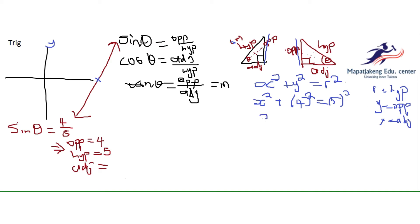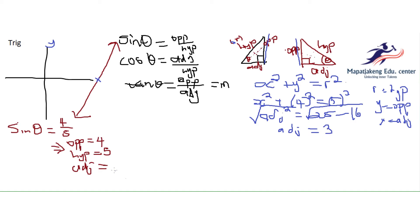From here we solve for x, which is our adjacent. x squared equals 25 minus 16. We take the square root of both sides — what we do on the left we also do on the right — and then we know that our adjacent side is 3.